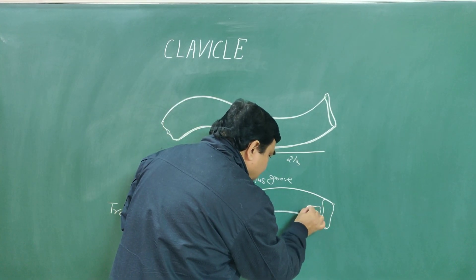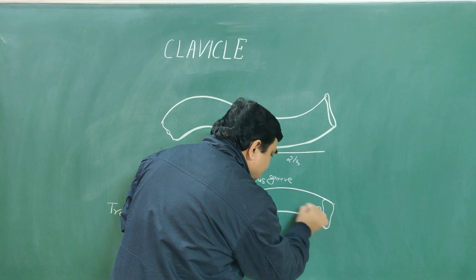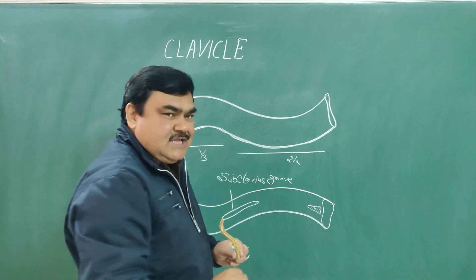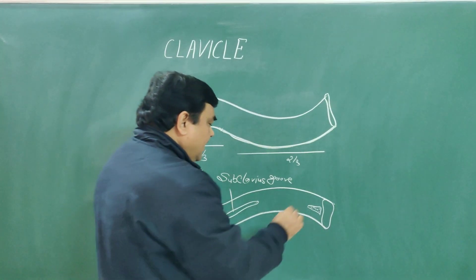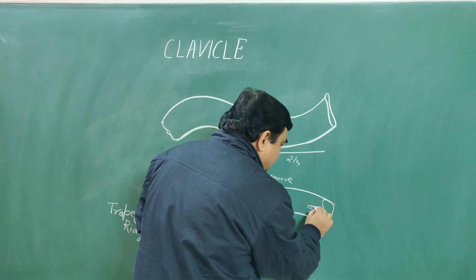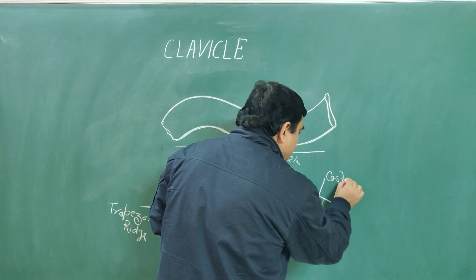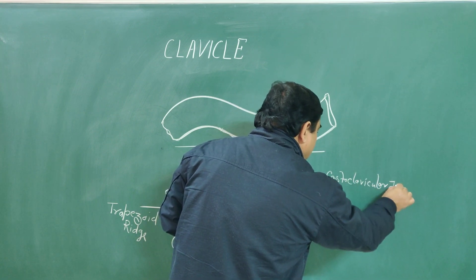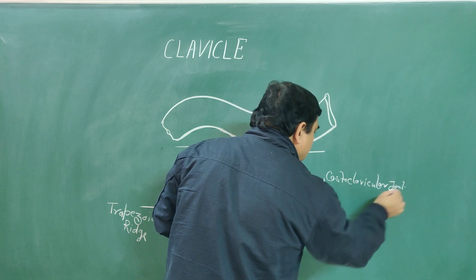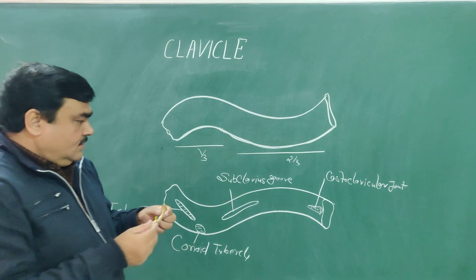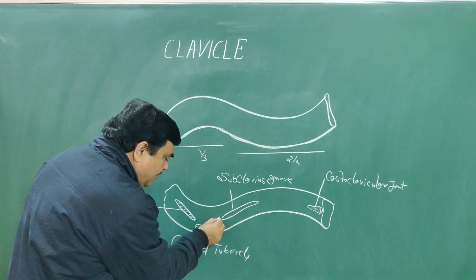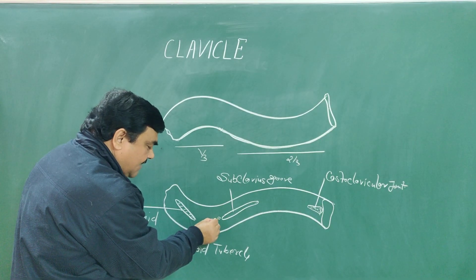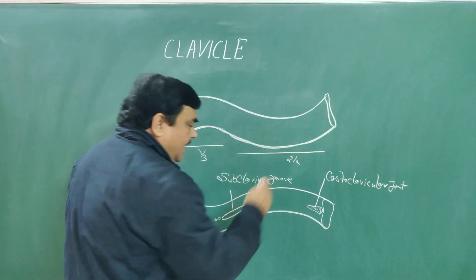Here there is a rough area where the first costoclavicular ligament attaches, and here the costoclavicular joint is formed. Here is the position of the nutrient foramen; the direction of the foramen is towards the lateral side. That is why its medial end is growing.